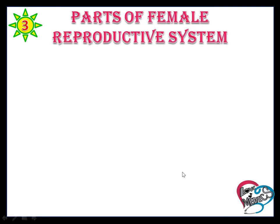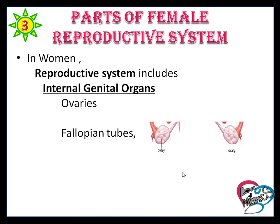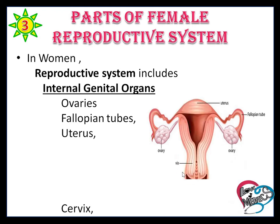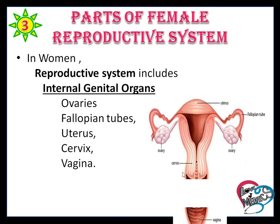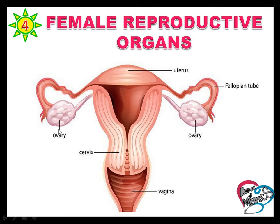Parts of the female reproductive system include internal genital organs and external genital organs. Internal genital organs are ovaries, fallopian tube, uterus, cervix, and vagina. External female reproductive organs are also ovary, uterus, fallopian tube, cervix, and vagina.